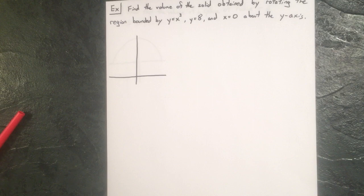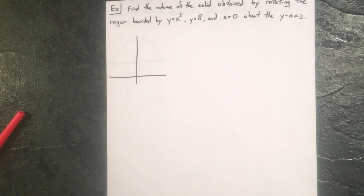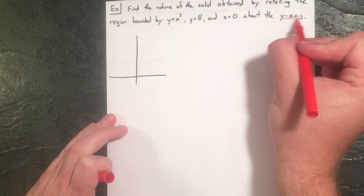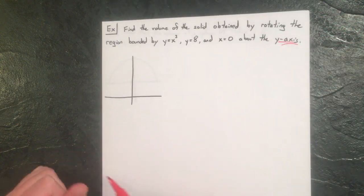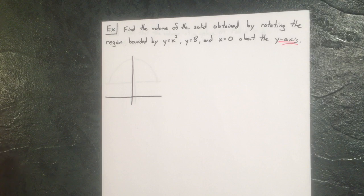Example two: find the volume of the solid obtained by rotating the region bounded by y = x³, y = 8, and x = 0 about the y-axis. This time we're rotating about the y-axis, which will change some things. Let's get the picture drawn first.